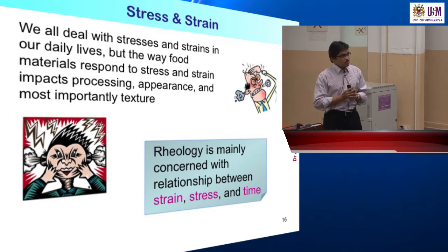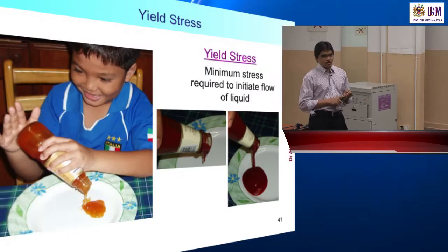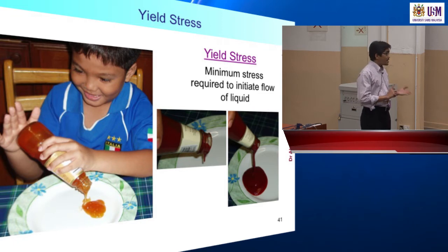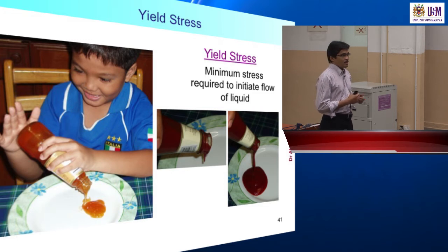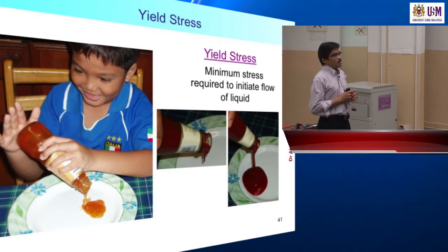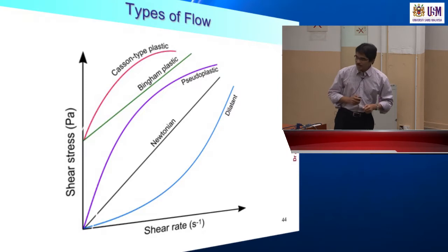Different materials would exhibit different types of flow behavior. In the previous lecture, I brought a few samples like tomato sauce, chili sauce, plum sauce, even water, and honey. Aziza demonstrated to all of us that some samples would flow readily and easily, while some maybe not so readily. So, they display different types of behavior. That's what we are going to learn in this lecture — types of flow behavior.